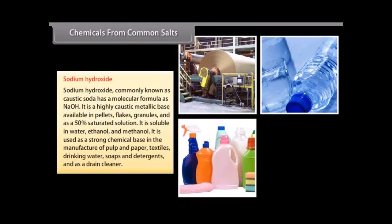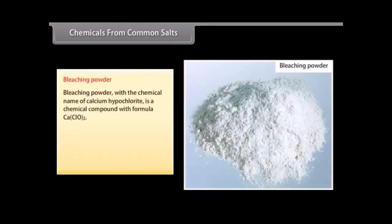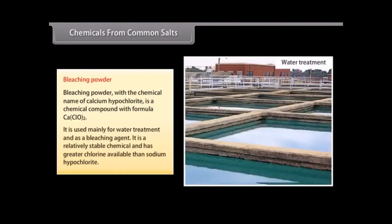Bleaching powder: Bleaching powder with the chemical name of calcium hypochlorite is a chemical compound with formula CaClO2. It is used mainly for water treatment and as a bleaching agent. It is relatively stable chemical and has greater chlorine available than sodium hypochlorite.